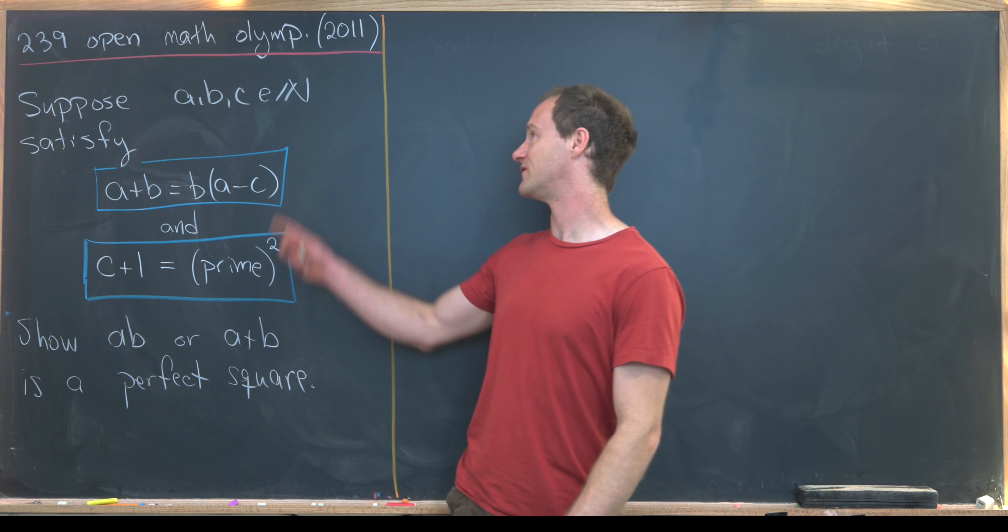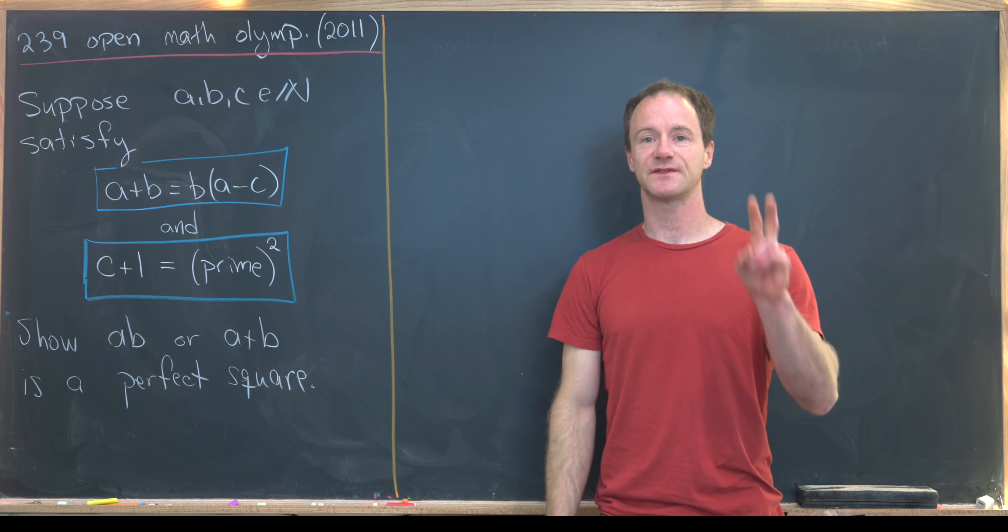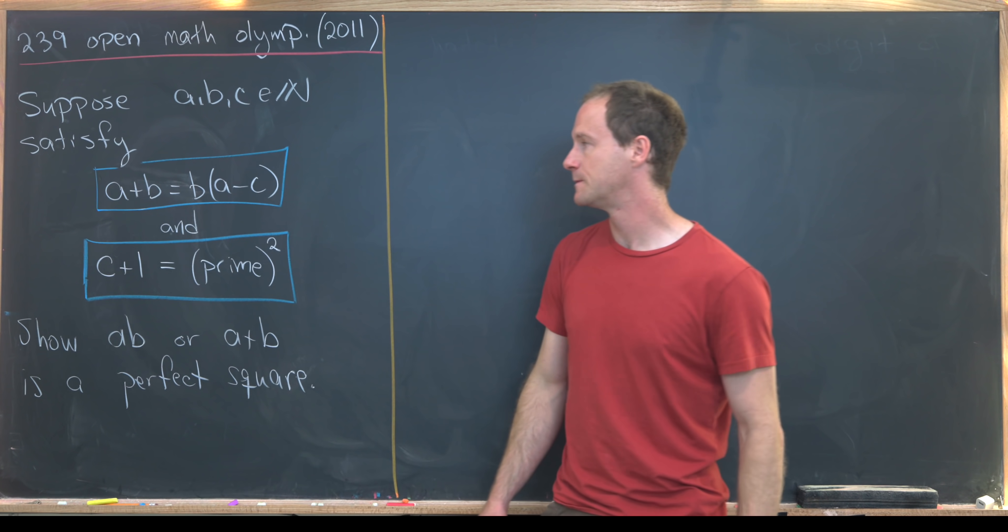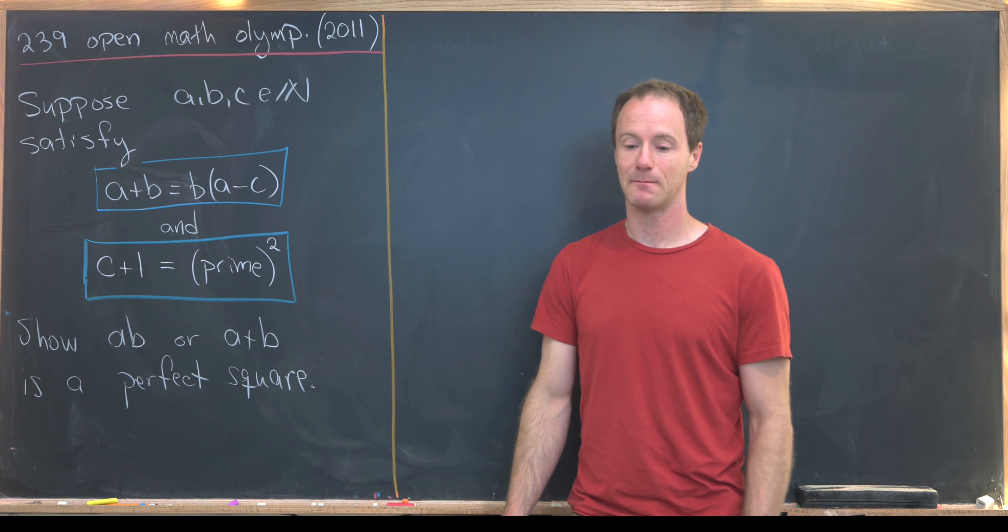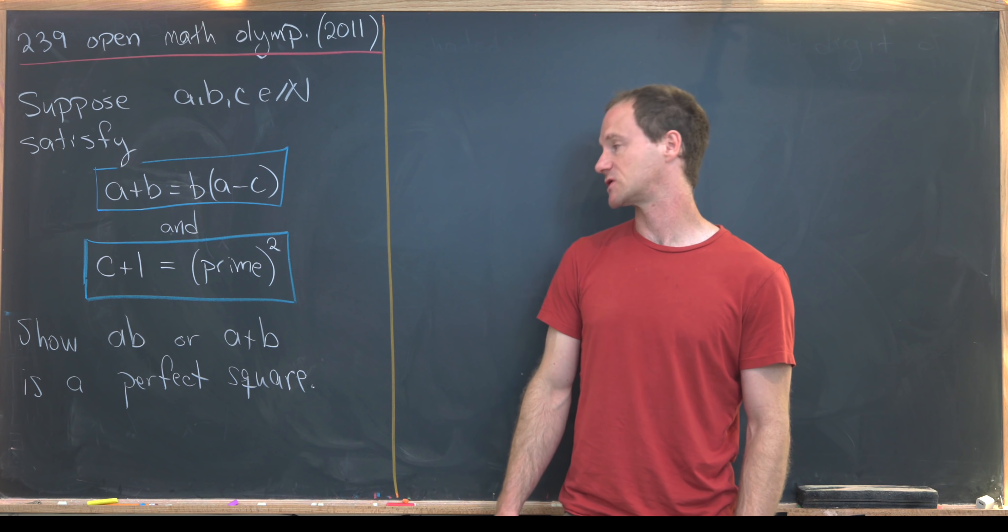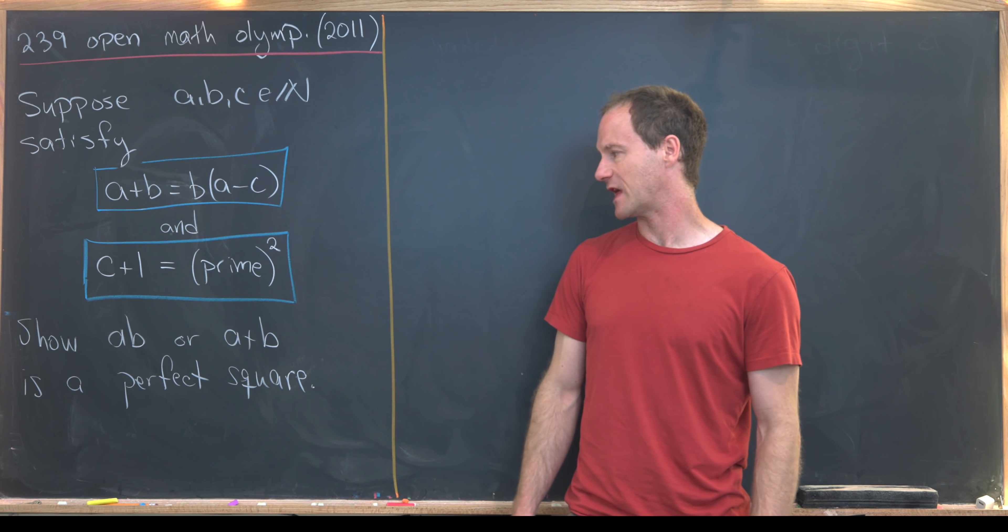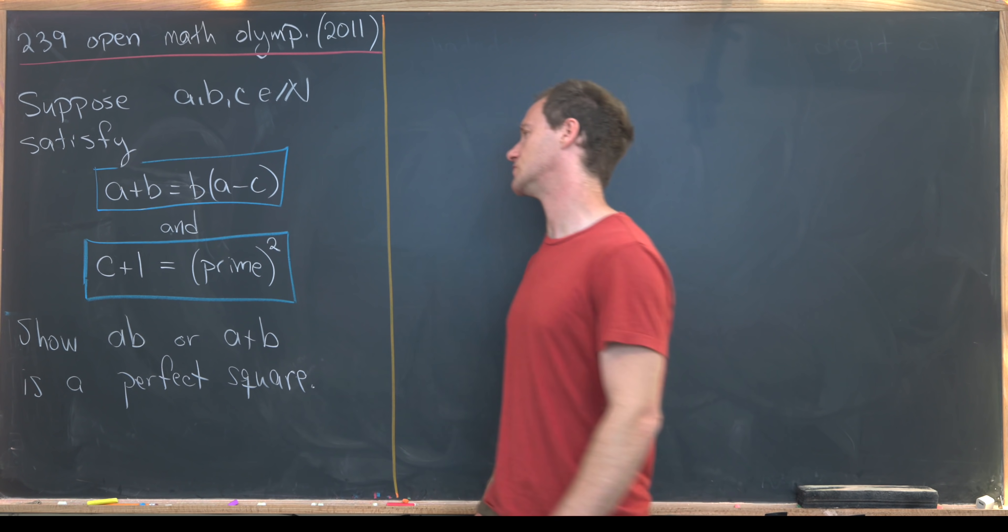Let's look into the problem. We want to suppose that we have natural numbers a, b, and c satisfying two conditions. The first condition says that a+b = b(a-c), and the second condition says that c+1 is a prime squared. Our goal is to show that either ab or a+b is a perfect square. So let's maybe get to it.